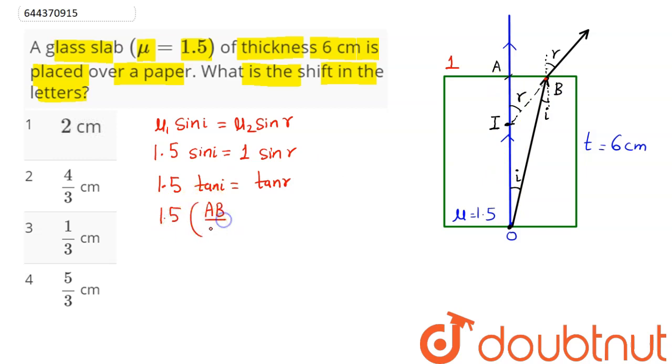And tan r here can be written as AB by AI. So this here is AB divided by AI. So we have here, canceling AB from both sides...